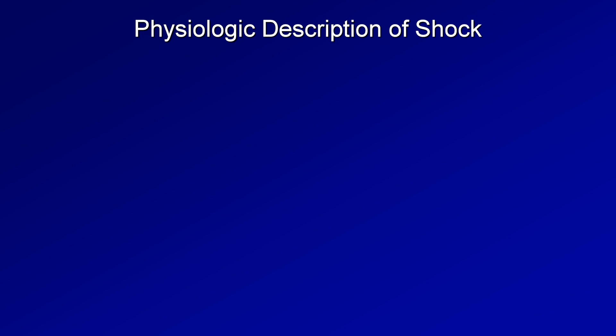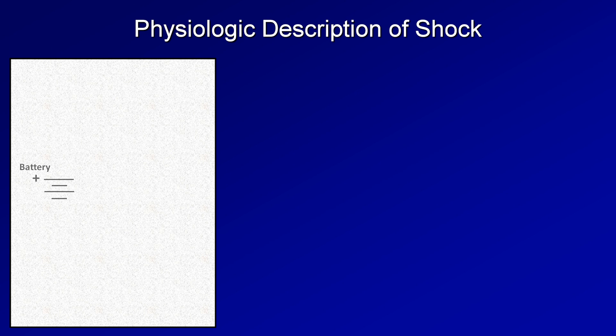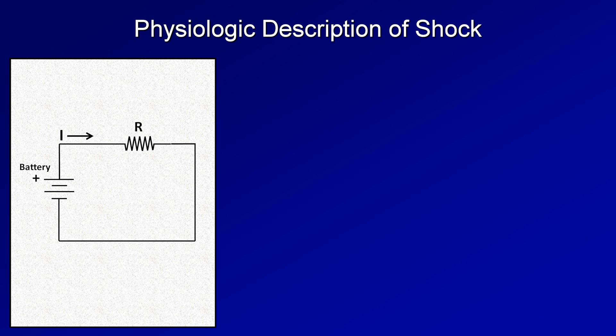This will seem odd at first, but it will make sense in a moment. We're going to start our model of shock with an electric circuit. The most basic electric circuit contains three components: a battery, which maintains what is known as an electrical potential gradient, or voltage; a wire that transmits current between points of different electrical potential; and some type of resistance to the flow of current, called a resistor. These three components are related by Ohm's law, which states that the voltage between two points in a circuit is equal to the current times the total resistance between those two points. The resistance can exist as a single resistor or from a combination of resistors.